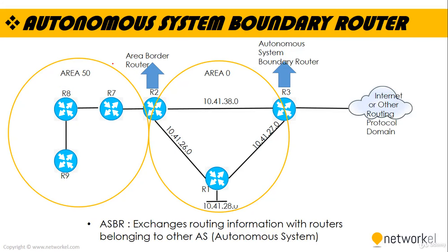Next is the Autonomous System Boundary Router, or ASBR. An ASBR is a router connected using more than one routing protocol that exchanges routing information with routers in other Autonomous Systems. ASBRs typically run an exterior routing protocol such as BGP, or use static routes, or both. An ASBR is used to distribute routes received from other external Autonomous Systems throughout its own Autonomous System.